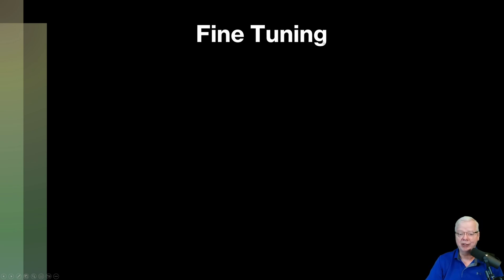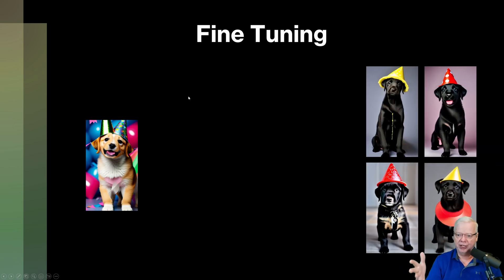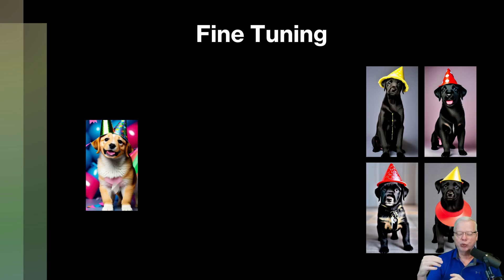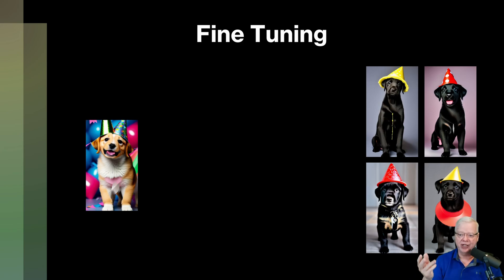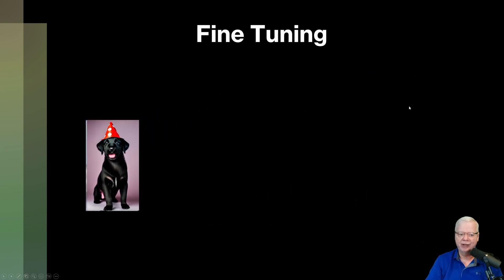Then we go on to what a fine-tuned model is. A fine-tuned model is where you start with a model and narrow the parameters. Let's say you want only black dogs with party hats on. So you take a bunch of black dogs' images and give them a weight. A weight in Stable Diffusion is basically how great a chance that image has of influencing the outcome. You take your images, add them to the model with greater weights, and then you have a fine-tuned model.